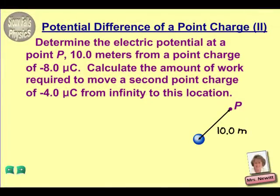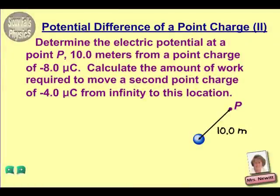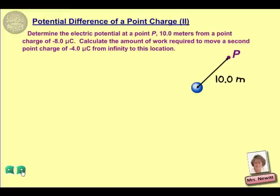Your Sioux Falls physics teacher here again, looking more at potential difference of point charges. We have a charge that is negative 8 microcoulombs, and we're to determine the electric potential at a point P which is 10 meters away from that point charge. Also, determine the amount of work required to move a second point charge to that location. So let's start by determining the electric potential at point P.